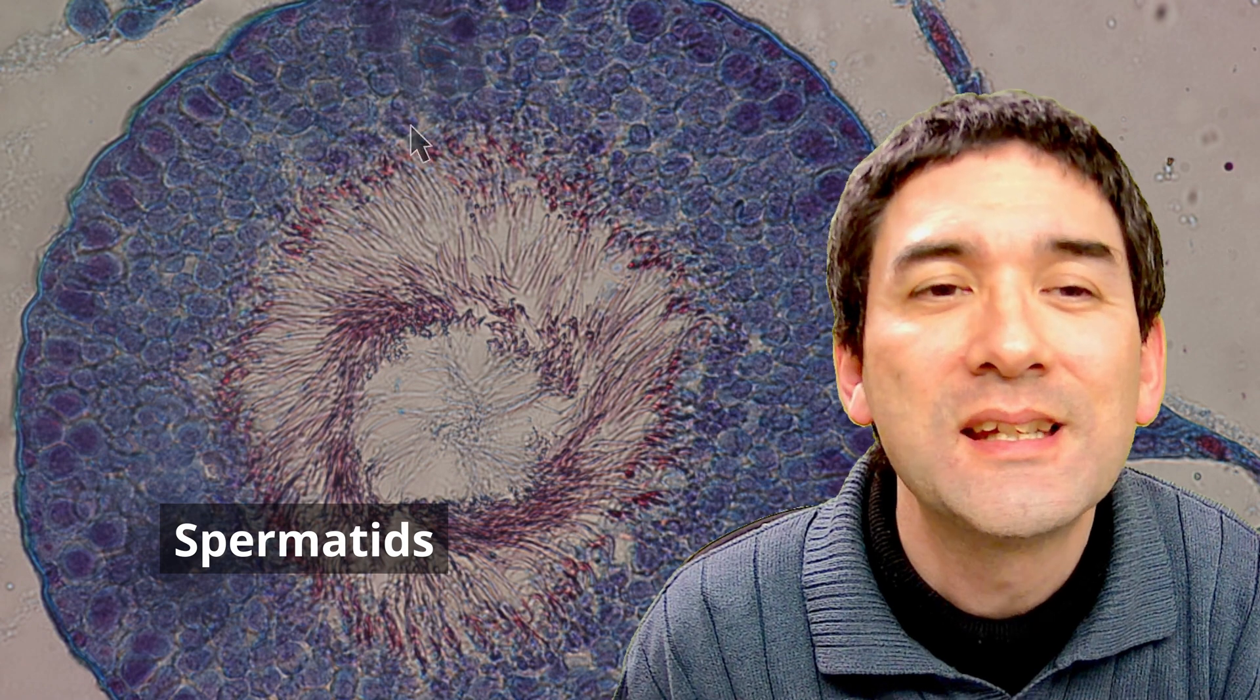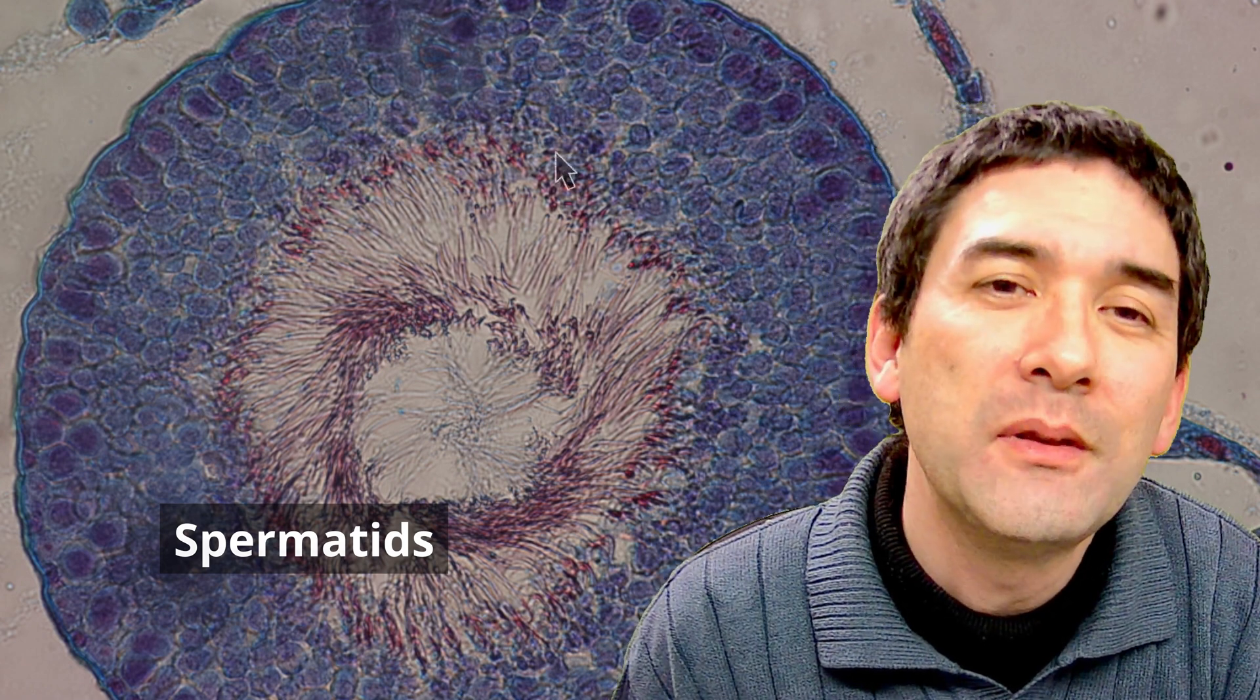And those four cells are then found in the inside here of the seminiferous tubule. Let's go back to this one over here. So there must be then four cells over here. And those four cells are referred to as the spermatids. And those spermatids, they basically have half of the DNA, but they do not have a tail yet. So what we need to do now is we somehow need to grow a tail.